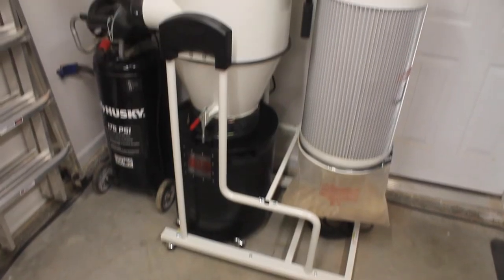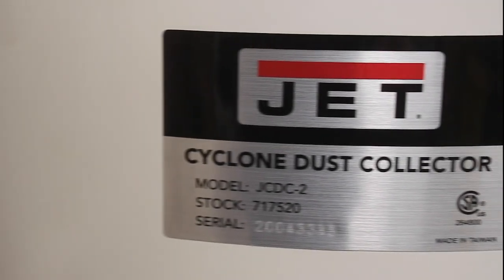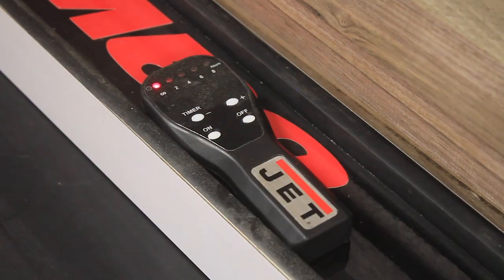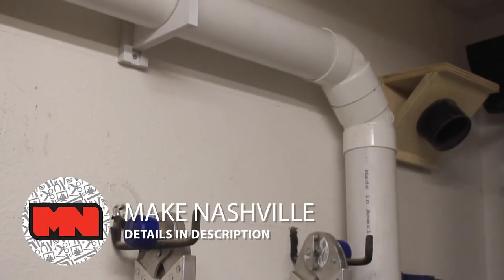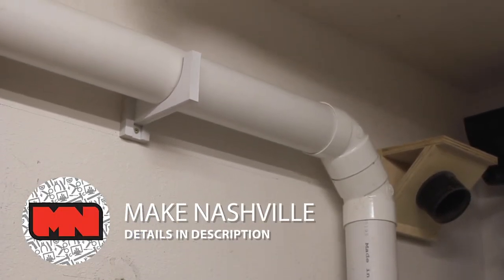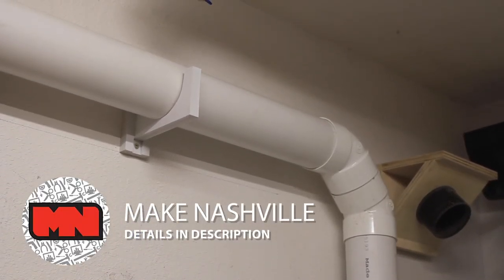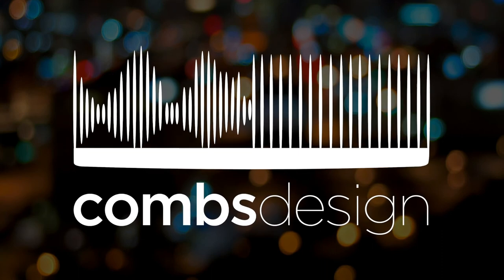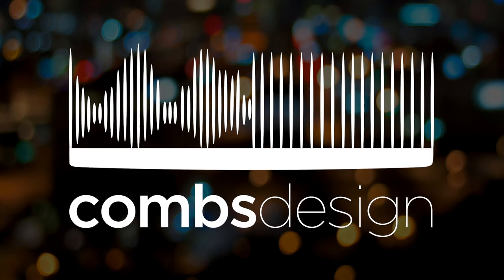Here is my new Jet 2 horsepower cyclone dust collector. I recently purchased it to replace the junk Rockler dust collector I had been using. Finally, I want to extend a huge thank you to Make Nashville. I recently used their CNC's to make these pipe holders for my dust collection. I'm going to be going in depth with their CNC's on a couple of upcoming videos in the next few weeks. Stay tuned for those.